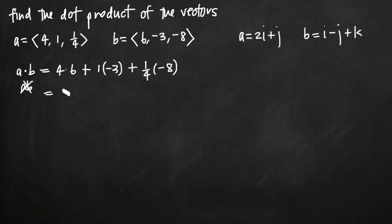So then we just simplify. We can multiply each one. We'll get 24. We'll get 1 times negative 3, which is negative 3. And we'll get 1 fourth times negative 8, which is negative 2. 24 minus 3 minus 2 is going to be equal to 19. So the dot product of a times b, where our vectors a and b are defined by these components here, is 19.